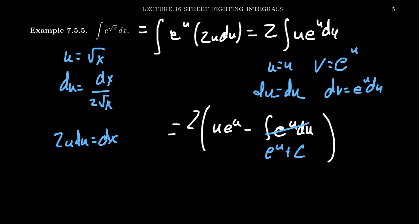So our antiderivative with respect to u is 2u e to the u plus 2 e to the u plus a constant. And then replacing u with the square root of x,